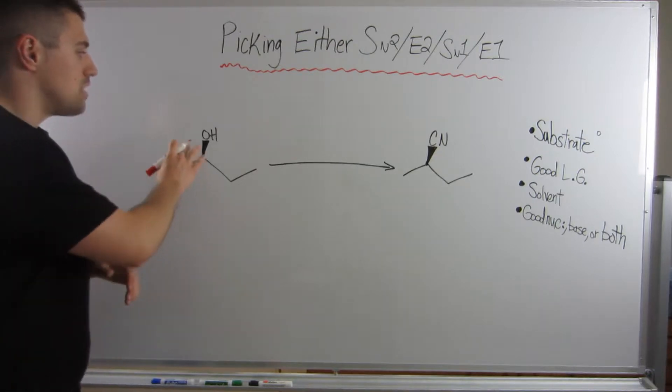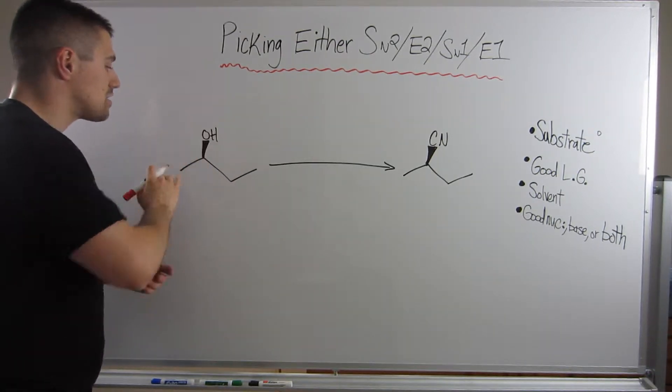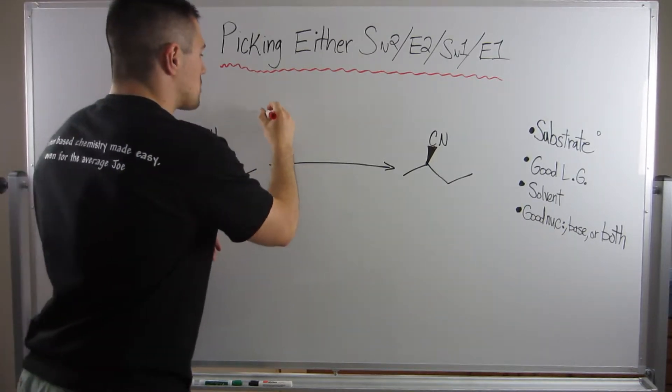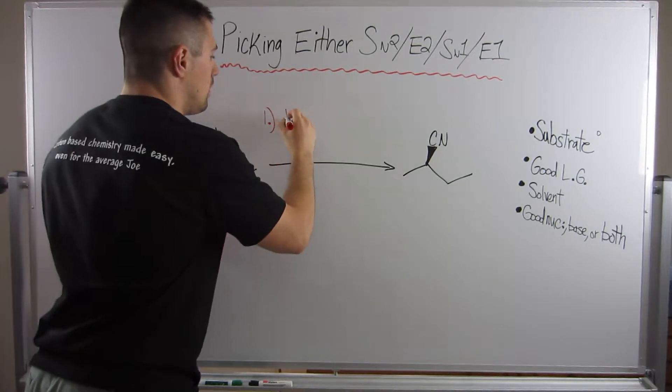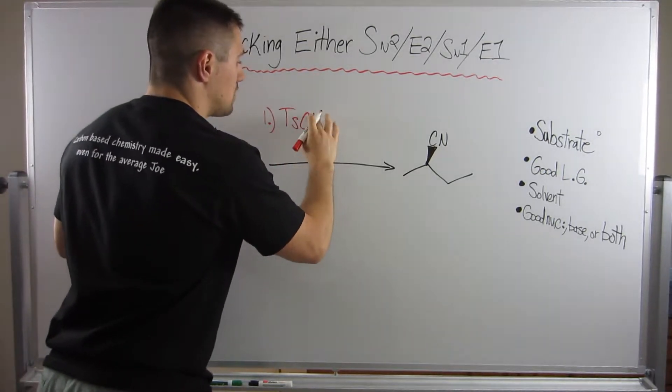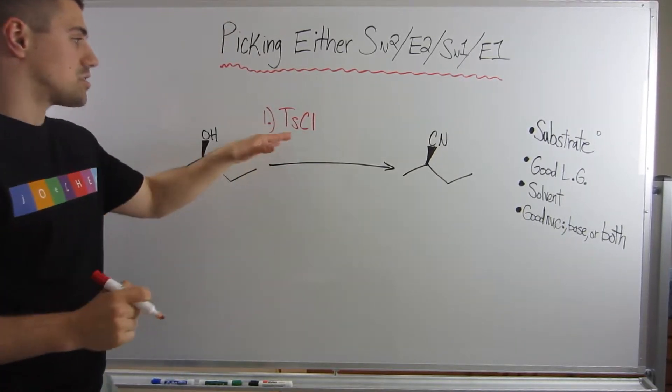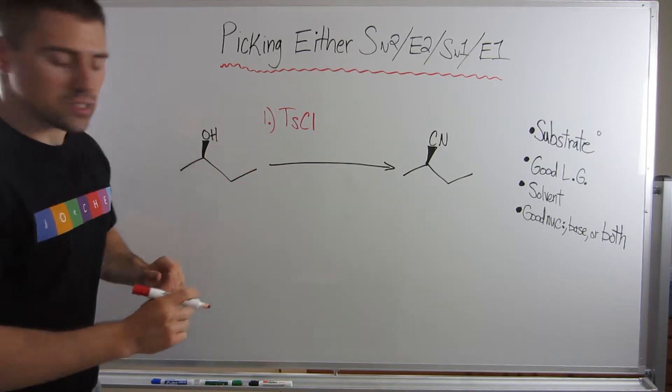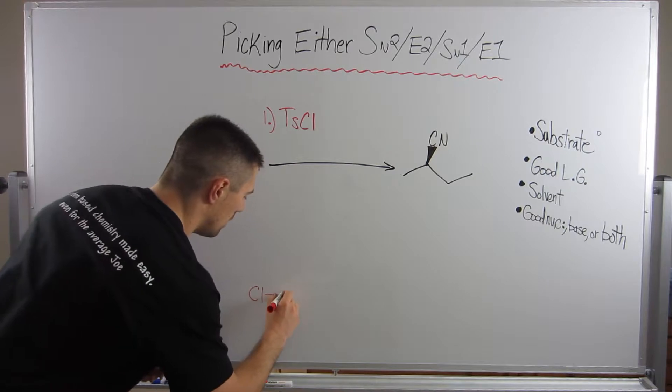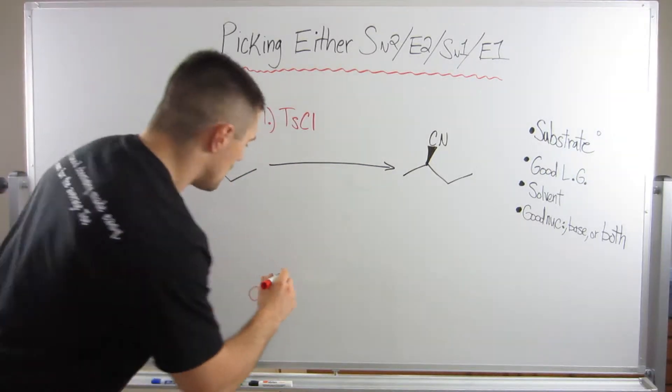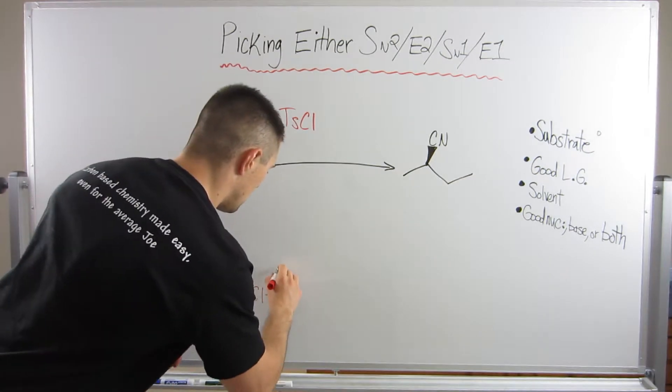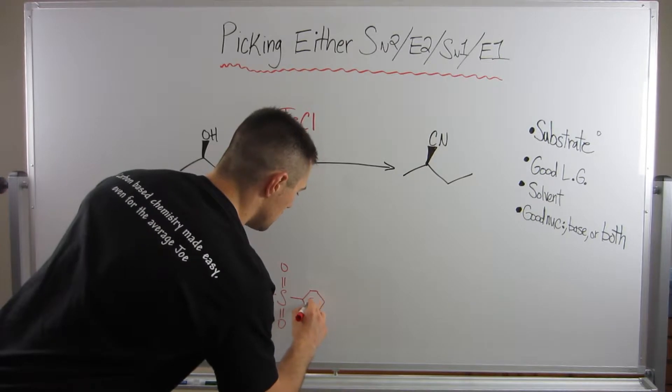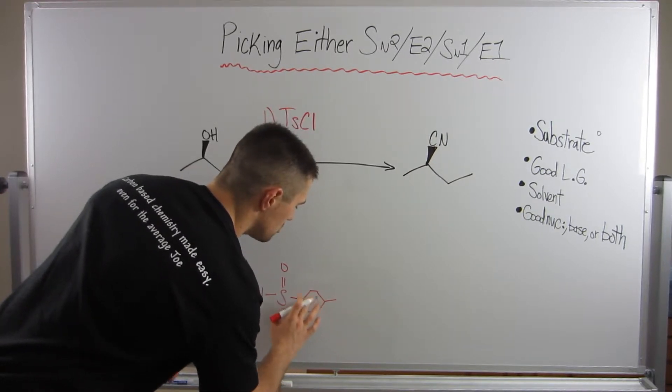Okay, so our first step is, this OH, bad leaving group, that is not going to work for us. So we need to first improve this OH to be a good leaving group. The way we're going to do that is we're going to have a first step of, and we haven't talked about this together yet, so this is a nice way to introduce it, this compound called tosyl chloride. And all tosyl chloride is, it looks like this.